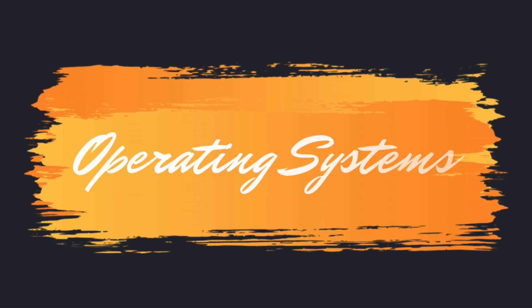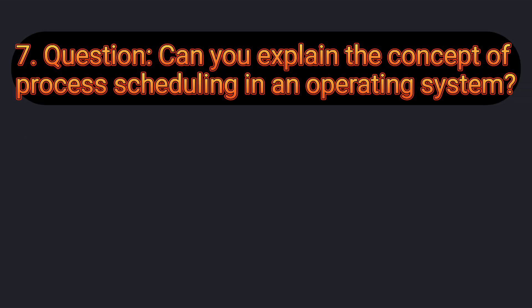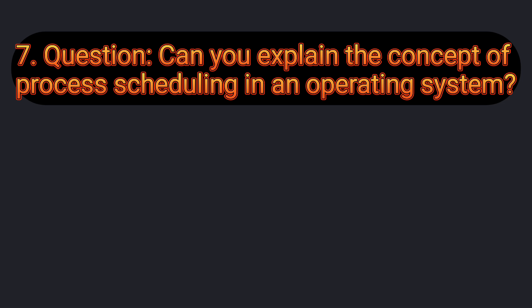The third section is Operating Systems. Question number 7: Can you explain the concept of process scheduling in an operating system? Process scheduling is the mechanism by which an operating system allocates the CPU to different processes. This involves selecting a process from the ready queue and allocating the CPU to it for a specific time period.